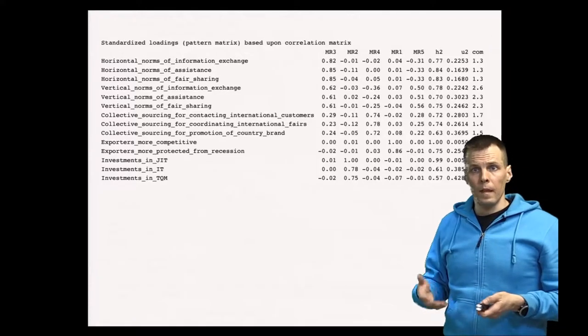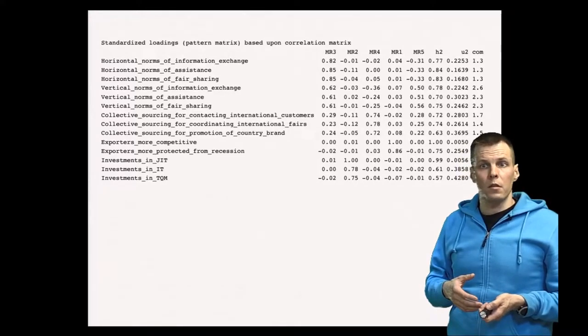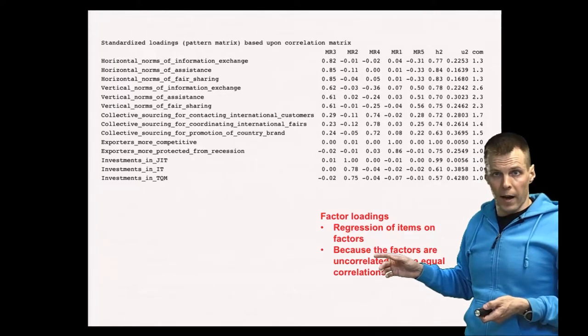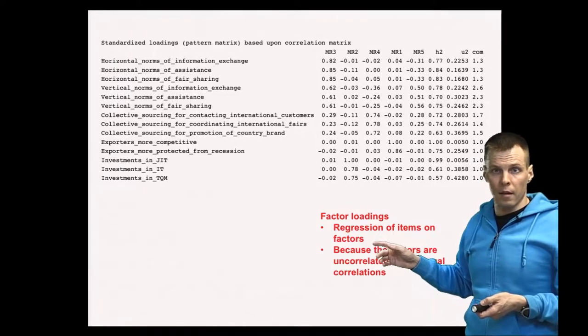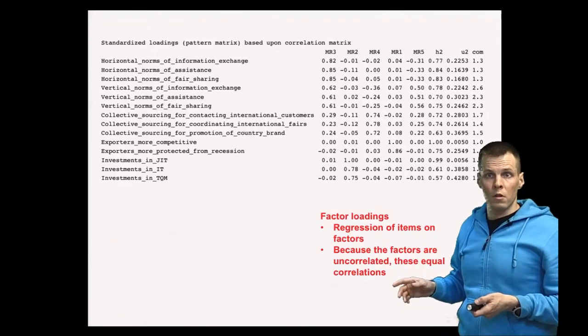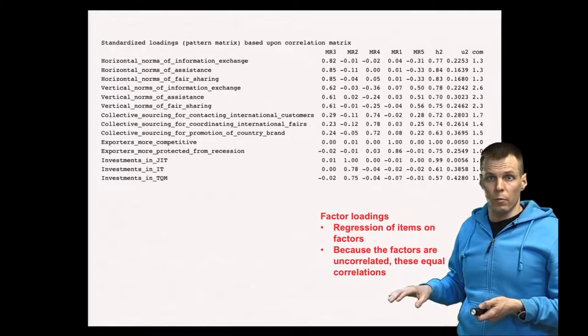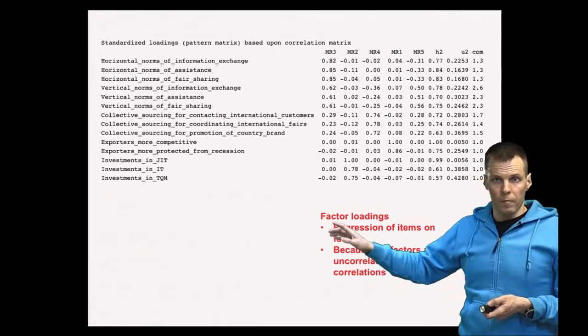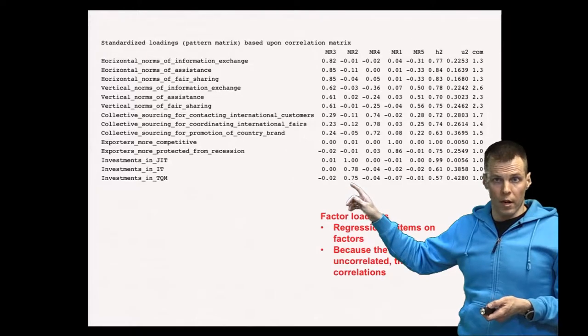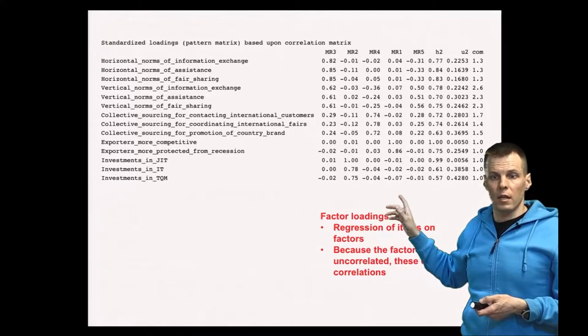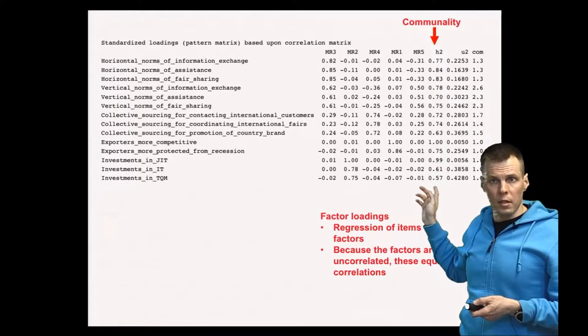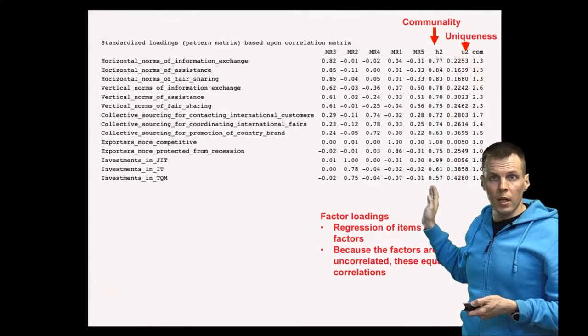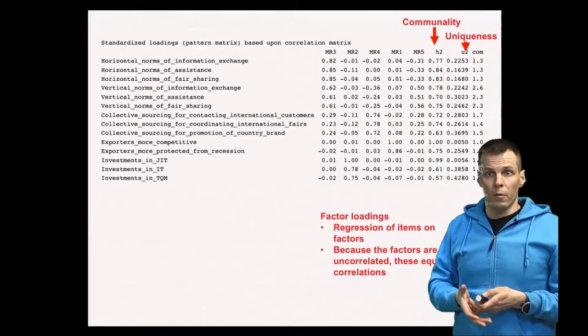So the factor loadings here provide information about how strongly each indicator is related to each factor. The factor loadings are regressions of items on factors—it's a regression path, a directional path. Because this is a standardized factor analysis solution and the factors are uncorrelated in this factor solution, which they are by default, the loadings also equal correlations. So this last item correlates at 0.75 with the second factor. Then we also have the uniqueness here, or the communality, the H-squared, which tells how much of the variation of the indicator all the factors explain together, and uniqueness—how much of the variance of the indicator remains unexplained.